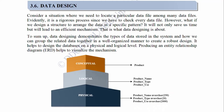3.6 Data Design. Consider a situation where we need to locate a particular data file among many data files. Evidently, it is a rigorous process since we have to check every data file. However, if we design a structure to arrange the data in a specific pattern, it will not only save us time but will lead to an efficient mechanism. That is what data designing is about. Data designing demonstrates the types of data stored in the system and how we can group the related data together in a well-organized manner to create a robust design. It helps to design the databases on a physical and logical level. Producing an entity relationship diagram (ERD) helps to visualize the mechanism.